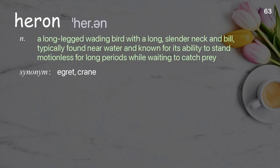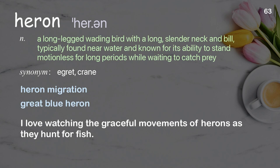Heron: a long-legged wading bird with a long, slender neck and bill, typically found near water and known for its ability to stand motionless for long periods while waiting to catch prey. Examples: heron migration, great blue heron. I love watching the graceful movements of herons as they hunt for fish.